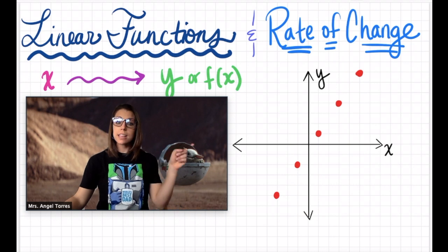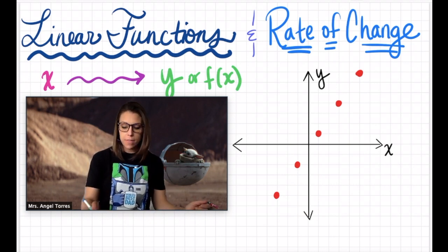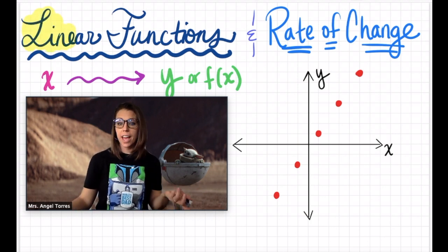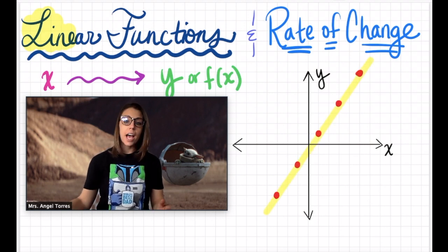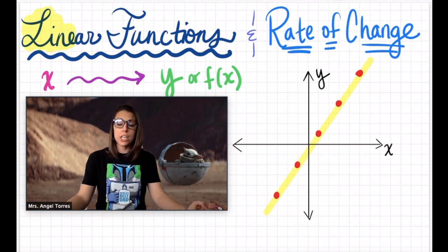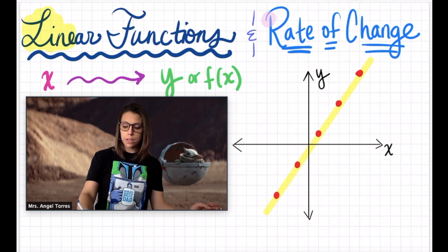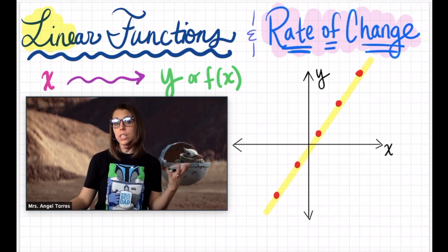The first one is called a linear function. Why do we think it's called a linear function? Well, if you look at the word linear, the word line is part of that. That's because all linear functions form a line when you graph their solution set. And that's because of a very specific pattern that happens with linear functions called the rate of change, or how you get from one solution to another.